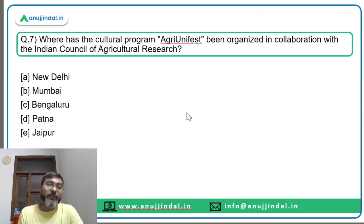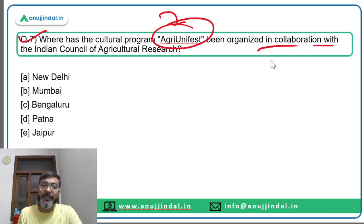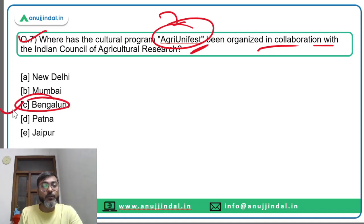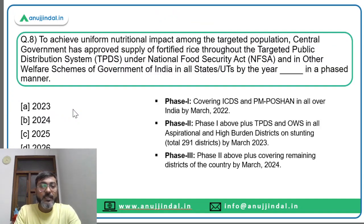Question seven: where has the cultural program Agri Unifest been organized in collaboration with ICAR? It was organized in Bengaluru. Option C is the correct answer.